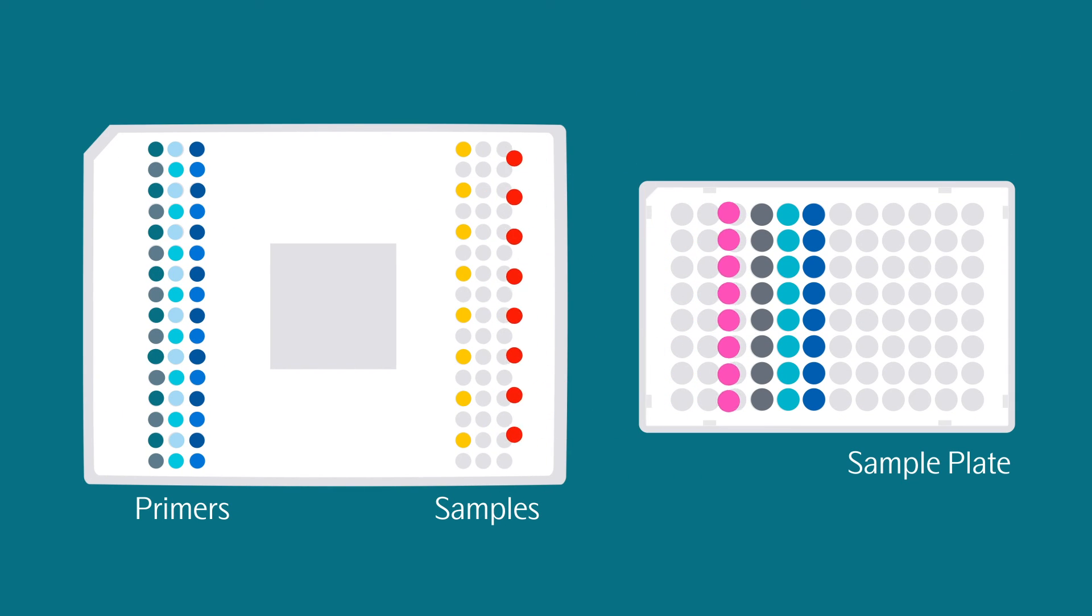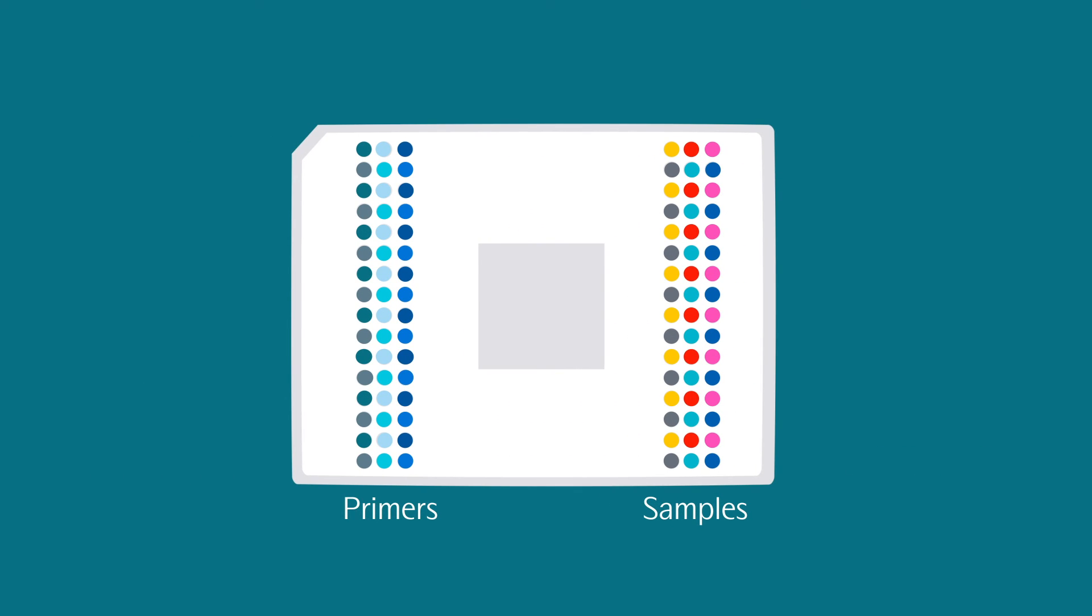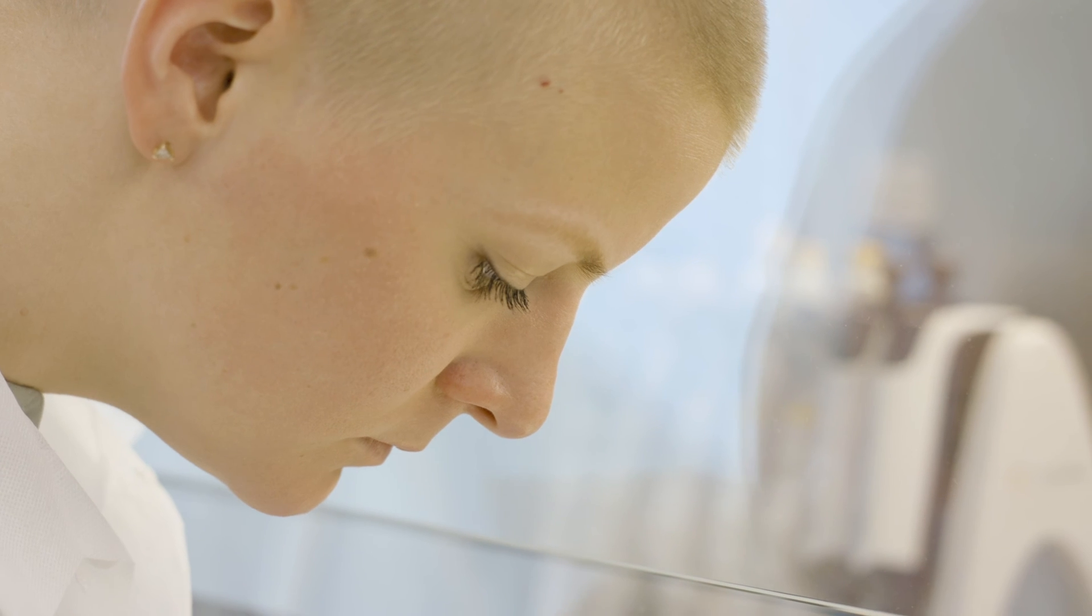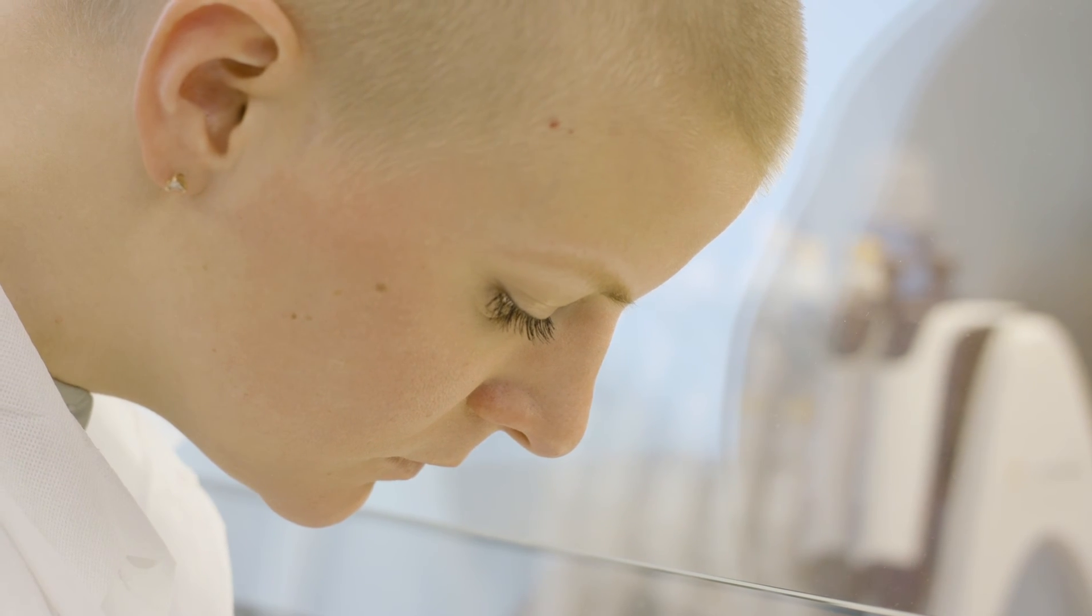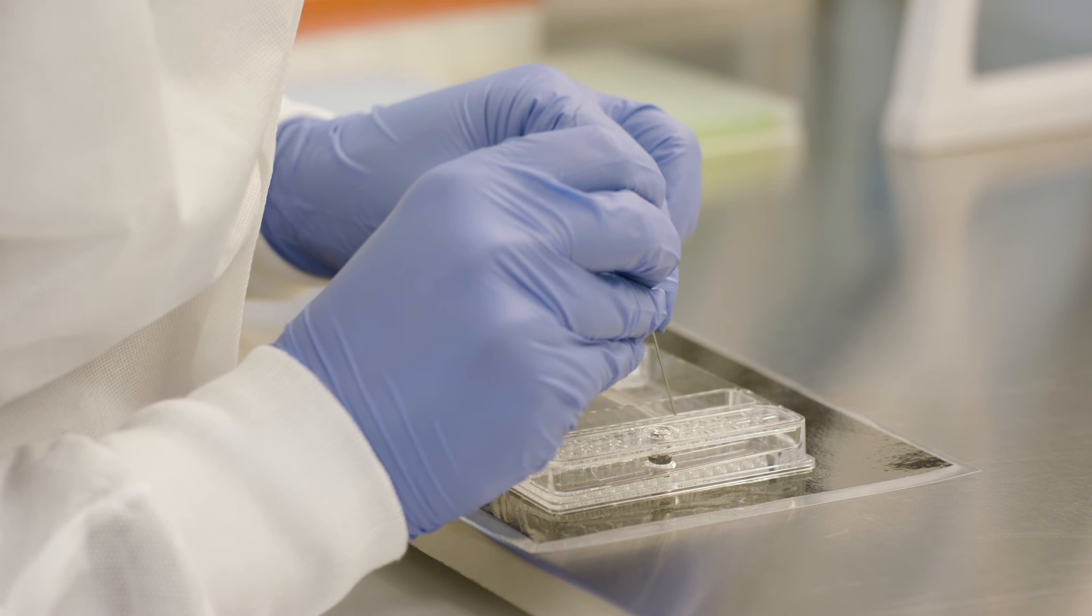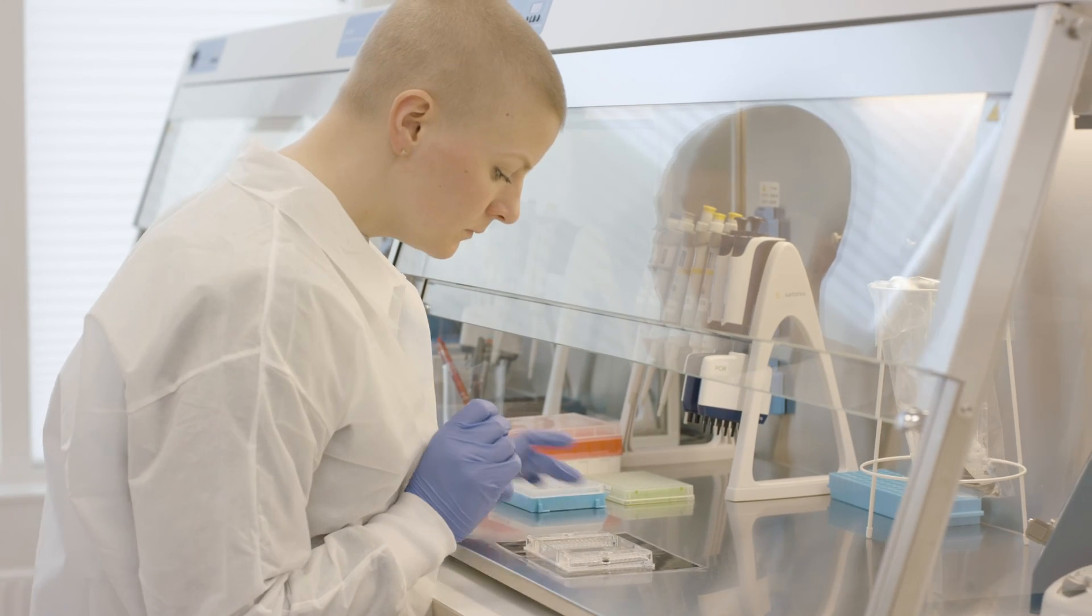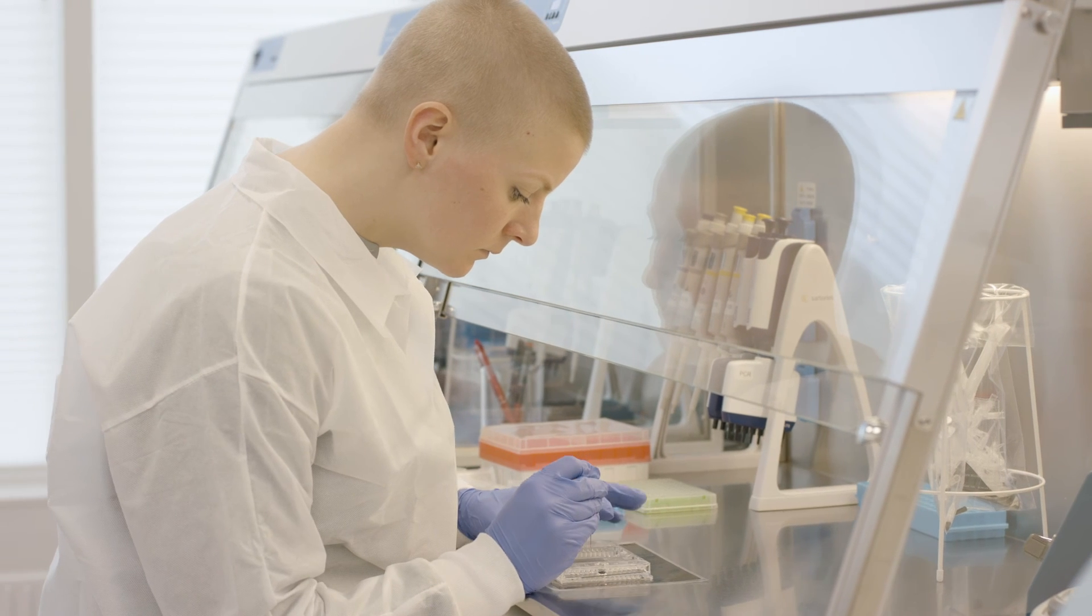Using reverse pipetting, pipette 5 microliters of each sample into the respective sample inlet on the IFC on the right-hand side. Carefully check for bubbles in both the wells for primers and samples before proceeding. If any bubbles are found, they should be removed using a syringe needle. Change needle between wells to avoid contamination.